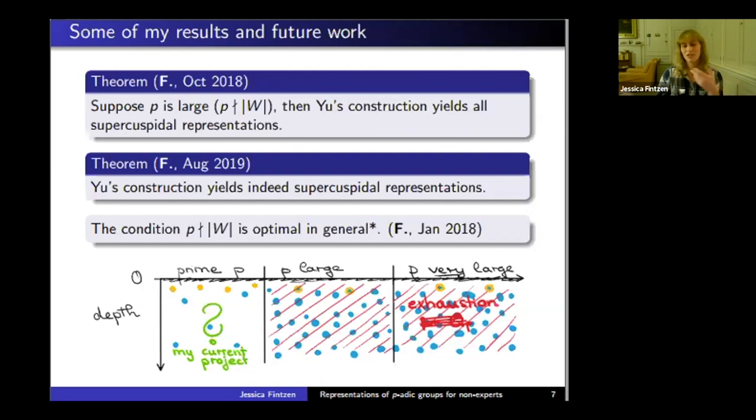The depth comes from our filtrations by compact open subgroups getting smaller and smaller, and you try to see how far you go down to have fixed vectors. The approach is very different. You don't have this picture in the real case. Thanks.